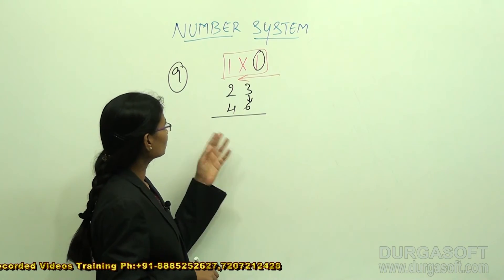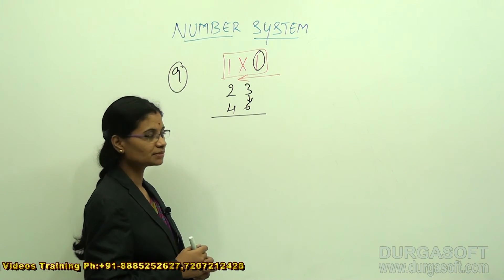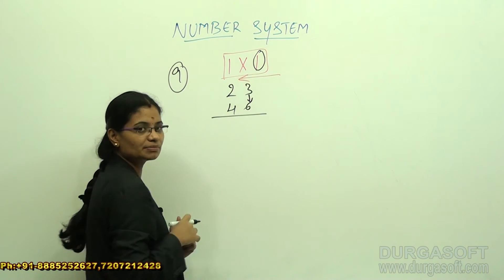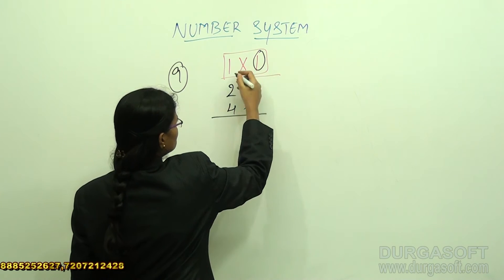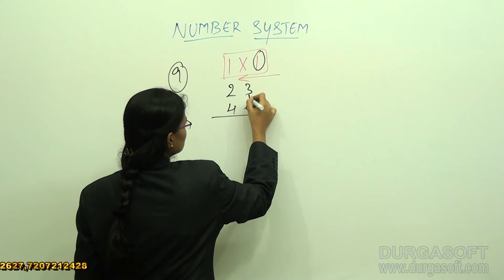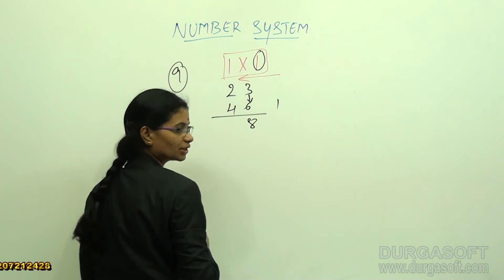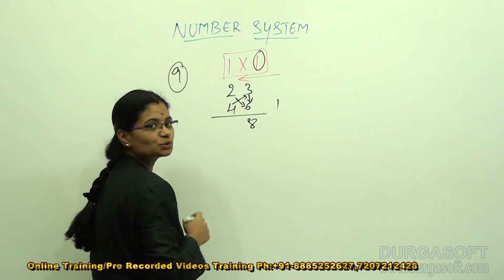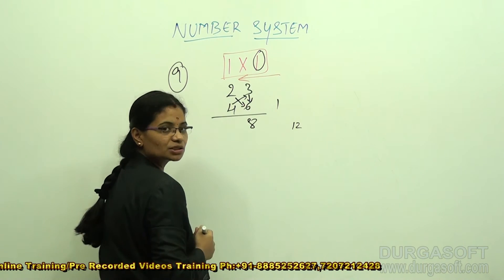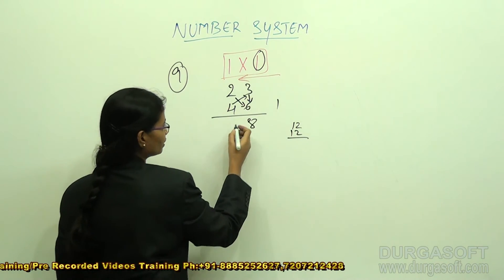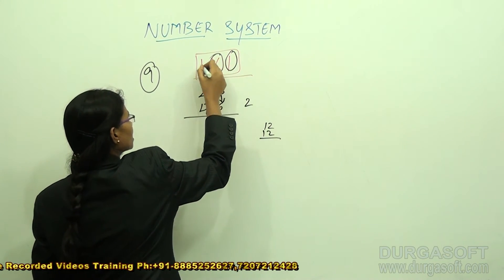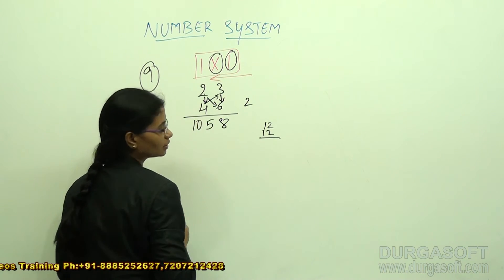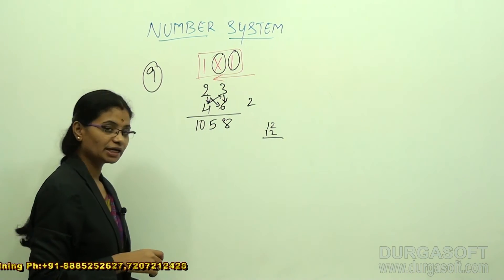We previously discussed 2-by-2 multiplication in number series, and we revisit it here. Starting from right to left: 6 × 3 = 18, write 8 and carry 1. Then cross-multiply: 6 × 2 + 4 × 3 = 12 + 12 = 24, plus the carry 1 gives 25; write 5 and carry 2. Finally, 4 × 2 = 8, plus 2 gives 10. This is how 2-by-2 multiplication works for any numbers.